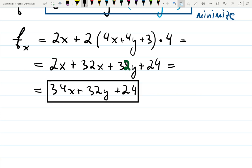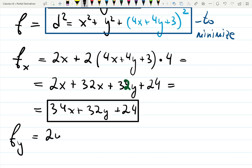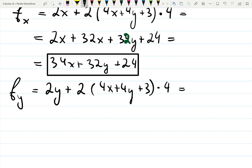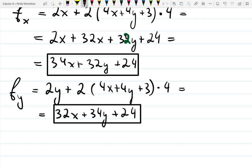This is my partial derivative with respect to x. Now repeat the same thing with respect to y. Going back to the blue part: 2y plus 2 times (4x plus 4y plus 3) multiplied by the derivative of the function inside, which is still 4. The answer is 32x plus 34y plus 24. The coefficients are almost the same.